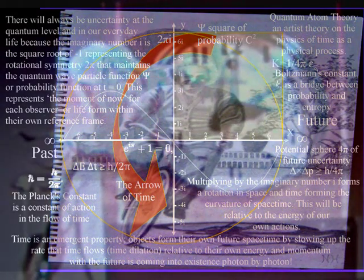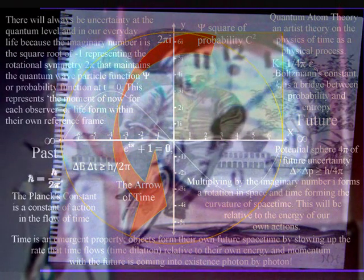In this diagram, we have the standard number line with positive numbers increasing in magnitude to the right and negative numbers increasing in magnitude to the left. In this theory, the positive numbers represent the future and the negative numbers represent the past, with the zero in the center representing the moment of now within that reference frame.